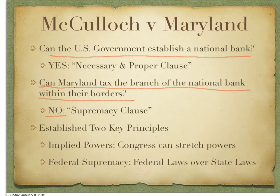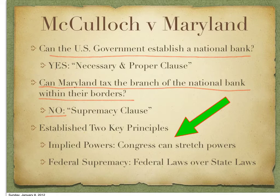The two big takeaways from this case are really important. It solidified the power of the federal government over the states — a battle that will continue all the way up to the Civil War. It also established the implied powers of the Constitution, meaning Congress can stretch their powers as long as the means of the laws they make coincide with the powers given to it in the Constitution, and that federal law is supreme over state laws.